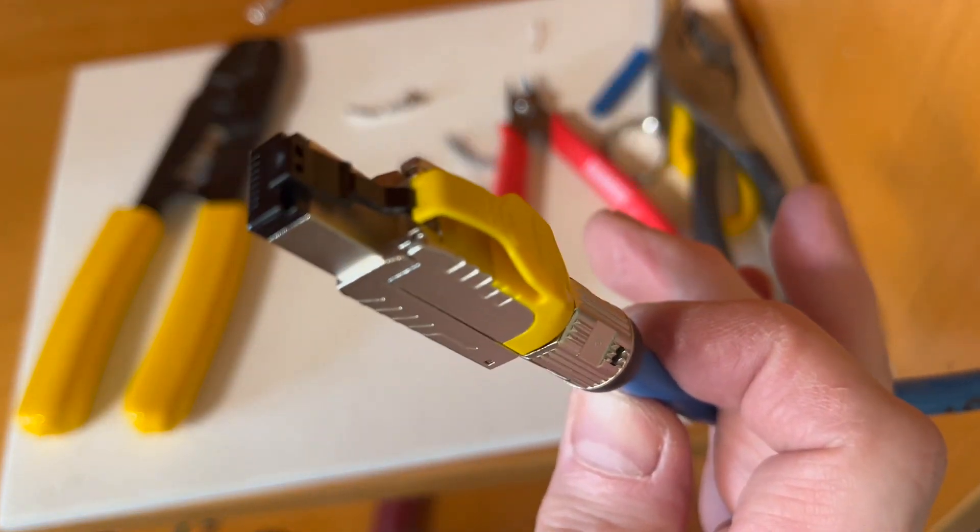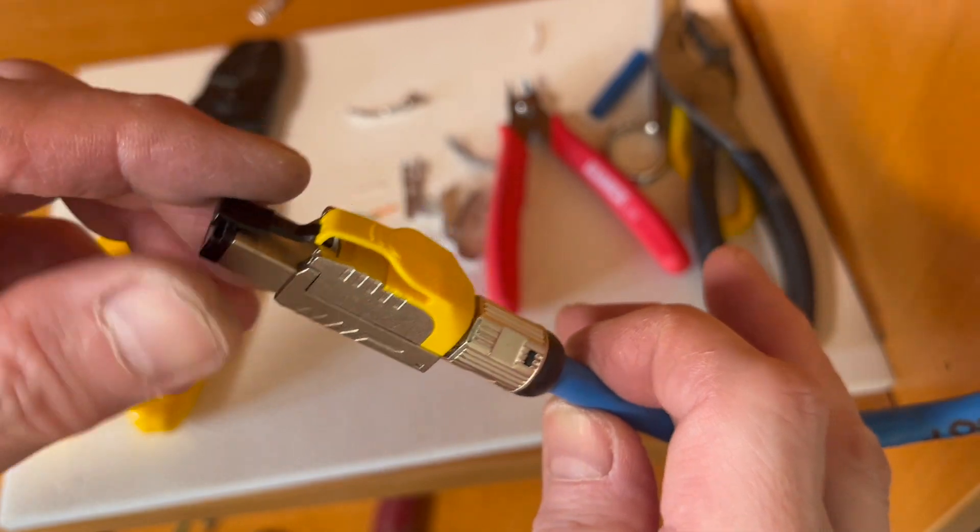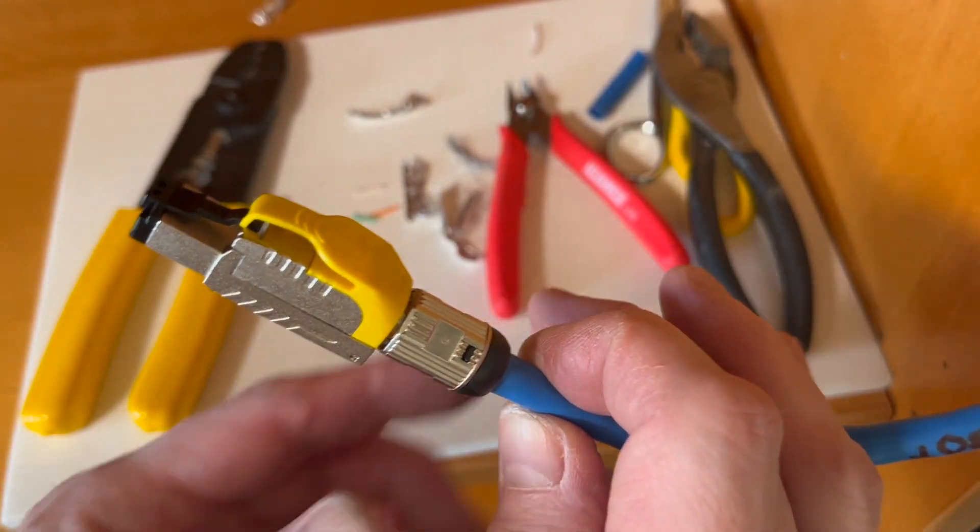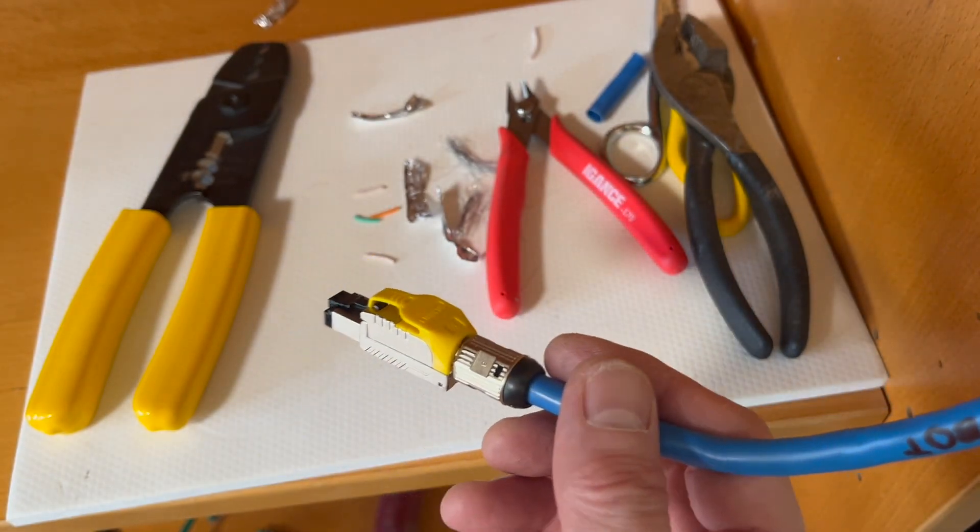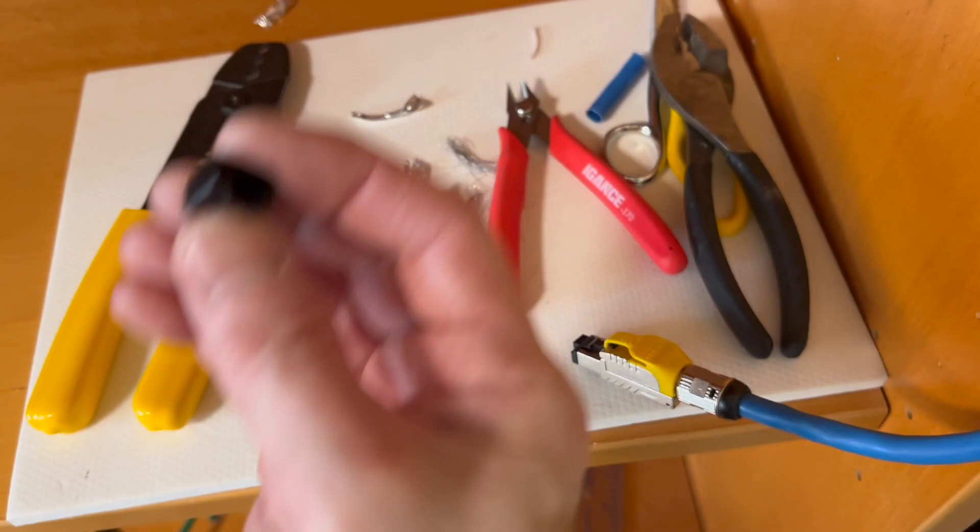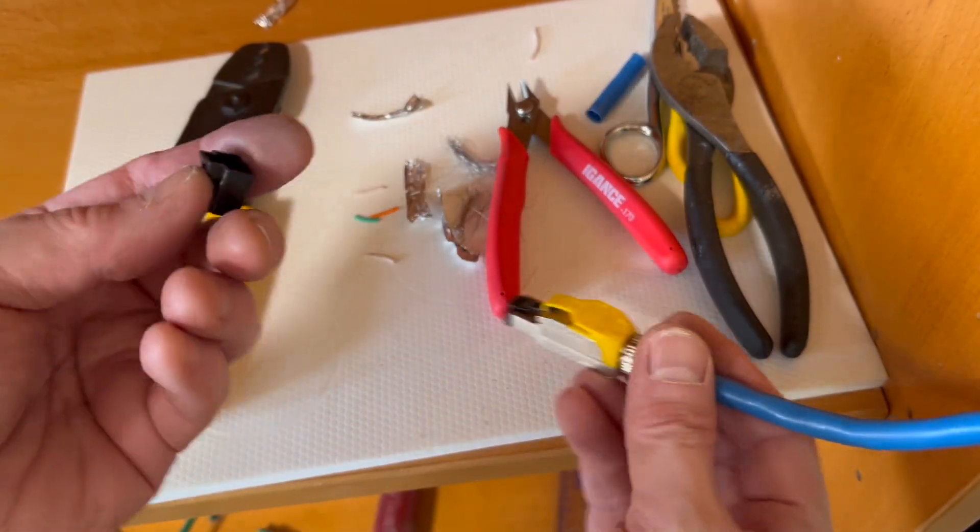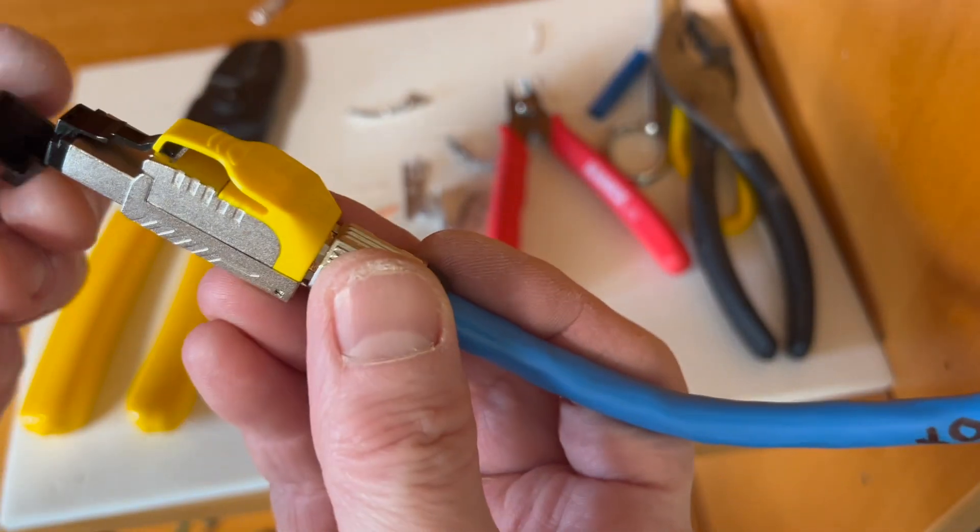So this is the cat 8 ethernet jack. There you go. Just demo the dust cap. I'm not going to use this because I'm going to plug this to the switch.